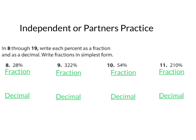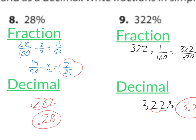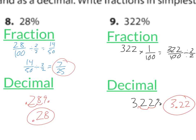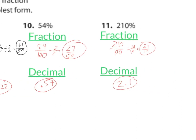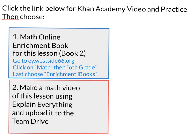Please do each of these problems writing the original and then writing it as a fraction and a decimal. Showing you the answers in three, two, one. Here are your answers. I'm going to zoom in one at a time. Moving on. Moving on in three, two, one. Thank you for watching this video. Please click the link below for the Khan Academy video and practice, and then you can choose one of these two options. We are actually on book three now for the enrichment iBook. Yes. You're awesome.